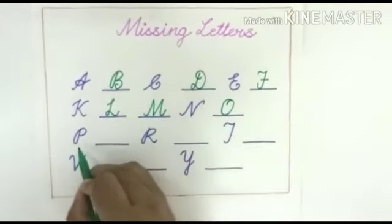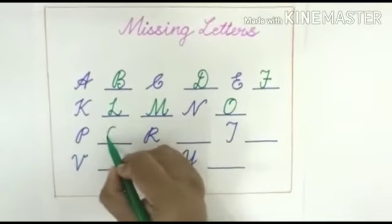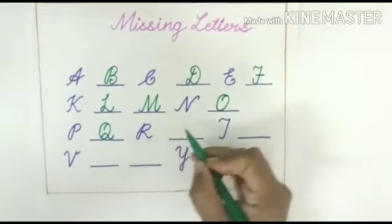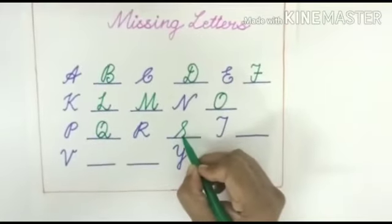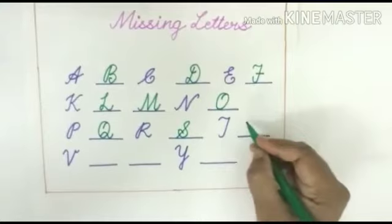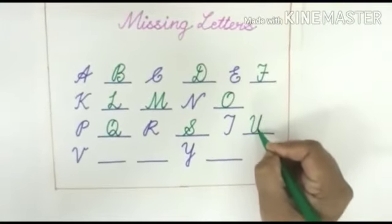The next letter is letter P. Which letter will come after P? Yes, letter Q. Then R. After letter R, letter S. After letter S, T is given. After letter T, which letter will come? Letter U.